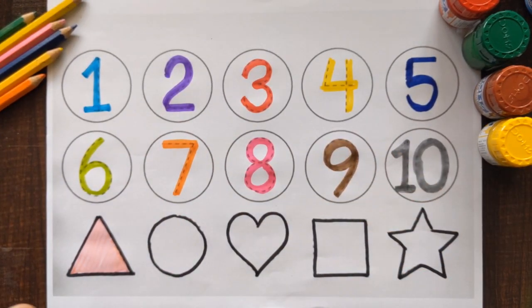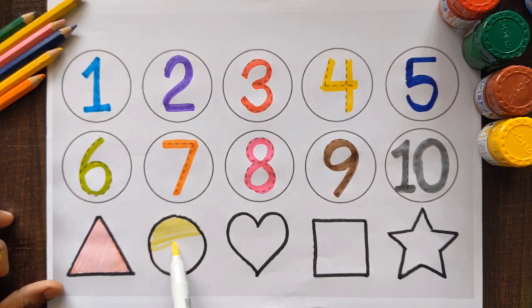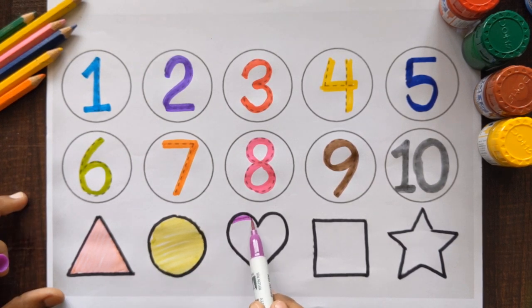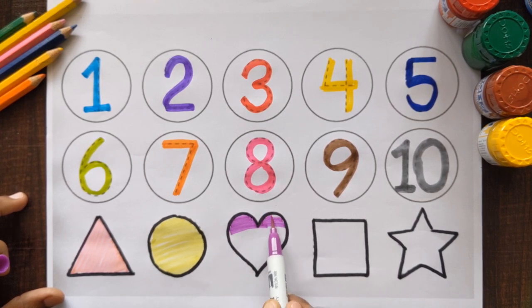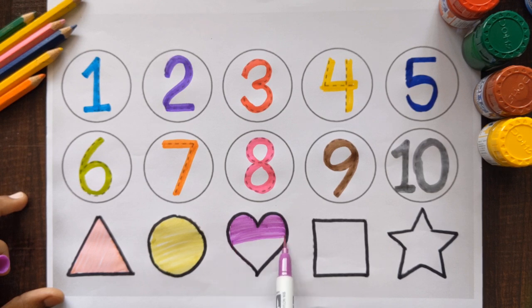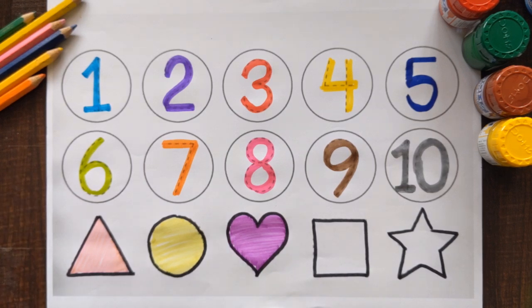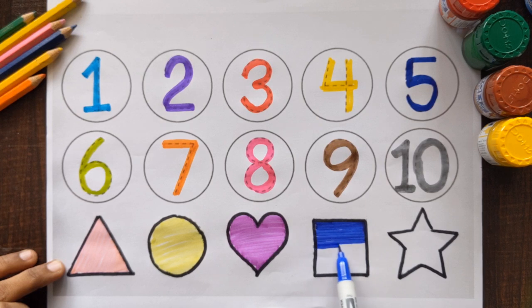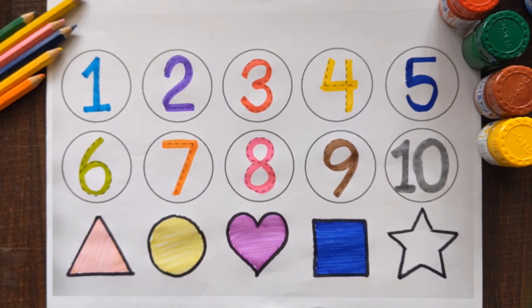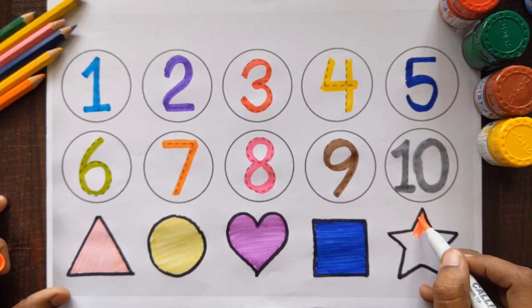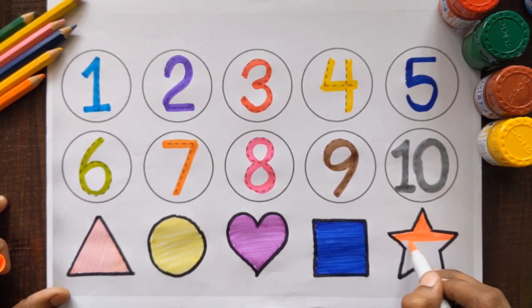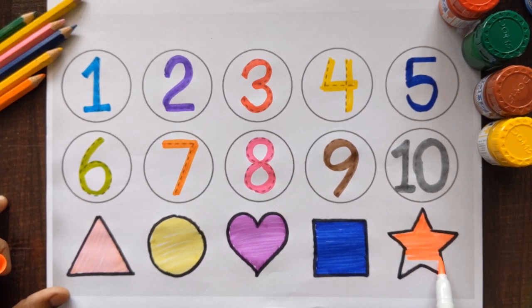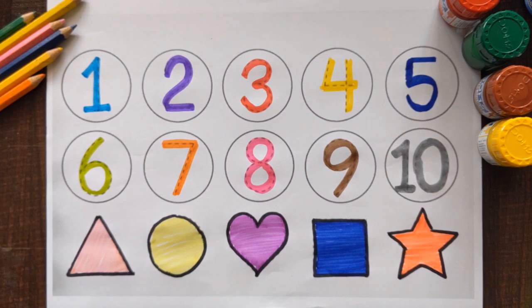Triangle, light pink color. Circle, yellow color. Heart, purple color. Square, dark blue color. And star, orange color.